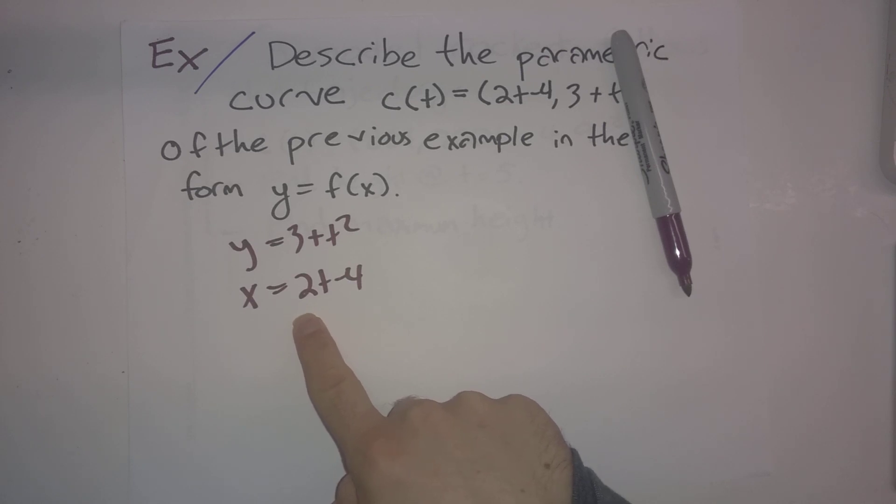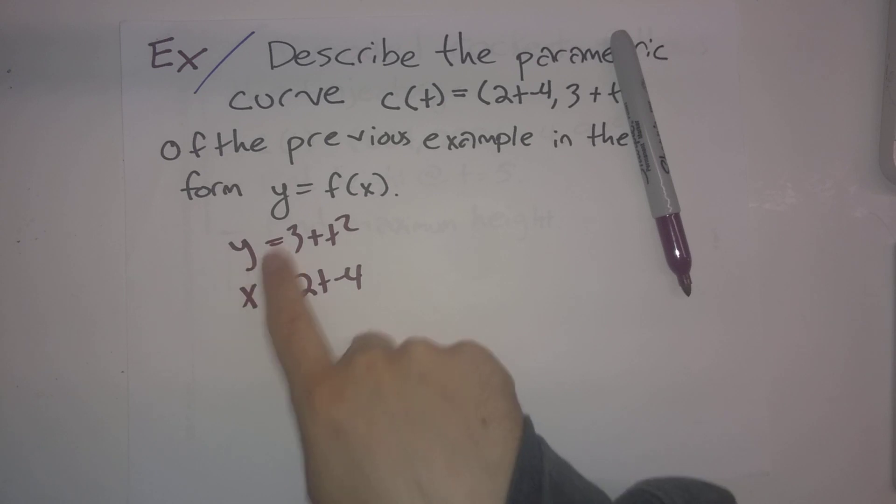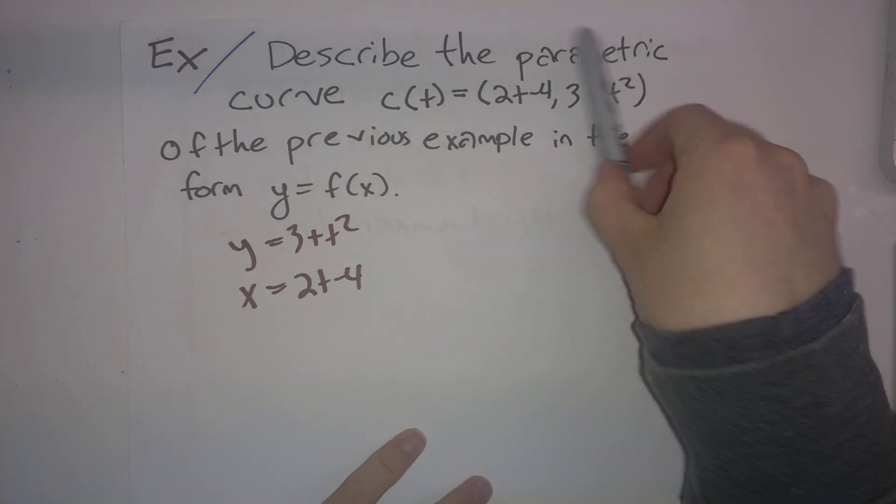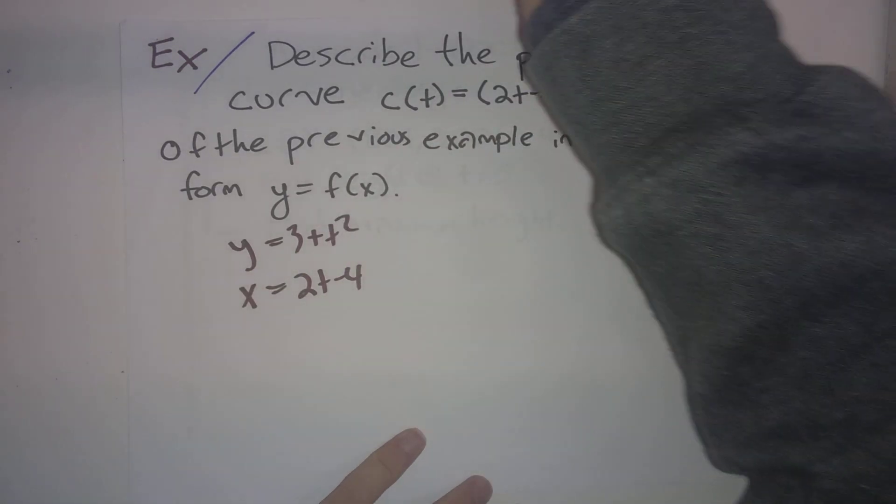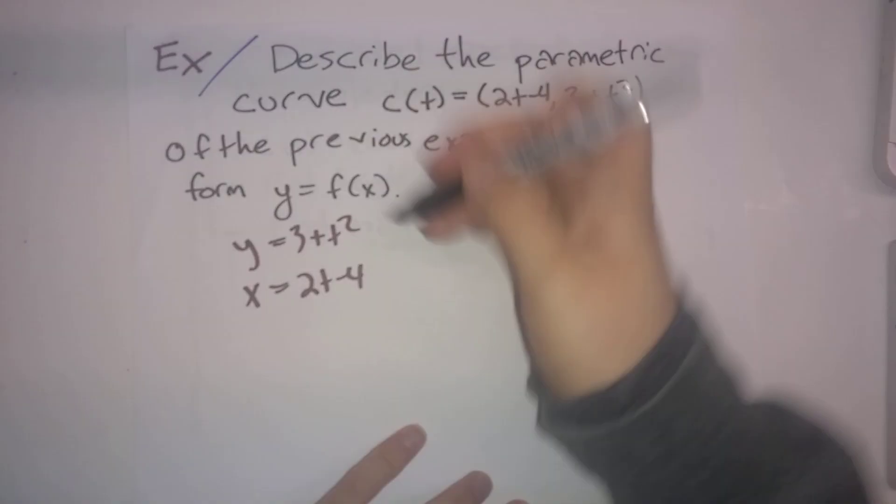We accomplish that by writing t in terms of x. So right now we have x in terms of t. If we invert this so t is in terms of x, then we can plug that in for t up here for y. So how do we accomplish that?